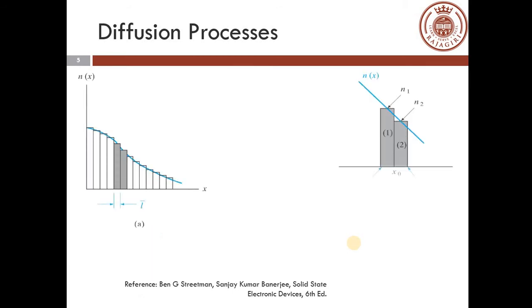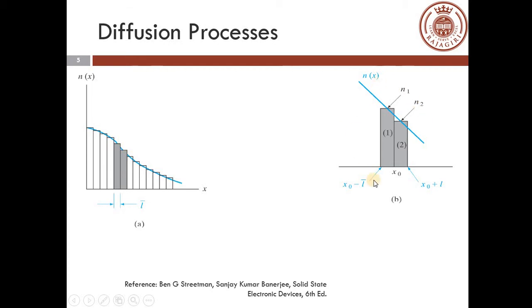Now let us understand the rate at which electrons diffuse by considering a one-dimensional problem. Consider the figure and an arbitrary distribution of electrons, n(x). Electrons diffuse by random thermal motion and by collision with the lattice and impurities. Let l-bar be the mean distance between collisions, so the entire distance x is divided into segments of width l-bar. The concentration of electrons at the center of each segment is calculated. The graded area is zoomed showing segment n1, segment 1, and segment 2, with concentrations n1 and n2 and width l-bar.